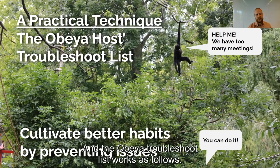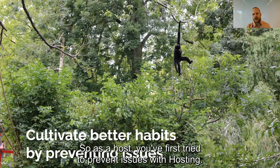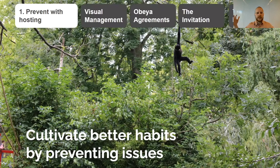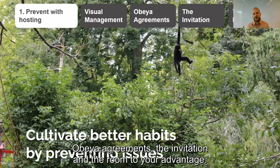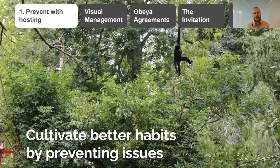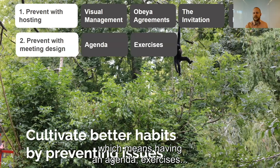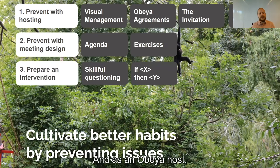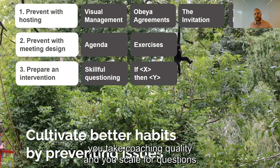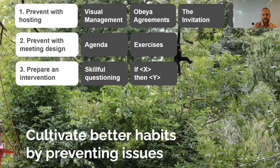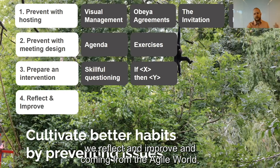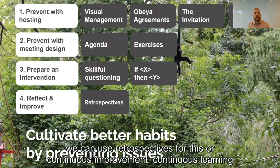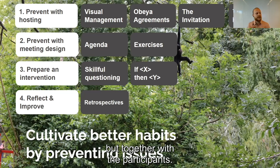The Obeya troubleshoot list has a priority order. As a host, you first try to prevent issues using hosting techniques — visual management, Obeya agreements, the invitation, and the room. If that doesn't solve it, you use the facilitator technique of meeting design: having an agenda, exercises, time-boxing. If the issue still happens, you intervene — as an Obeya host, you use skillful questions to solve these issues. And finally, if it still didn't work, you reflect and improve. Coming from the agile world, we can use retrospectives and continuous learning, not only as a host but together with the participants.